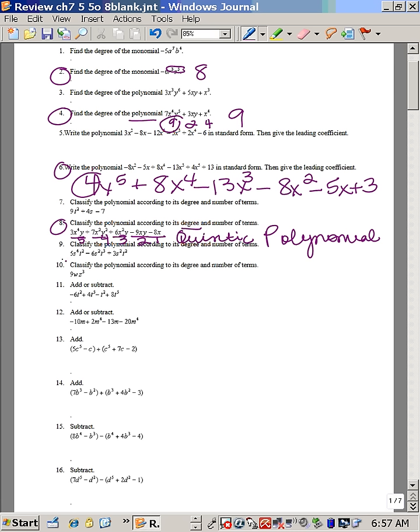All right, number 10. We need to also classify this one. First, the degree would be 4, and there's only one term. A fourth degree is called a quartic, and there's only one term, so it is a monomial.